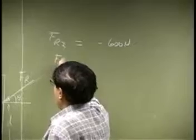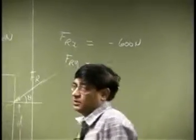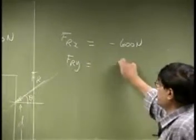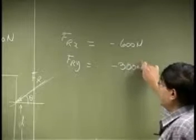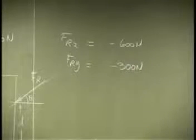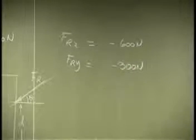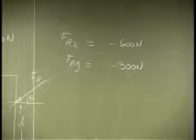Then FRY, there is only one force, that is going to be negative 300 newtons. When you are looking at the equivalent forces, then the two sets of forces should have the same X, Y components.